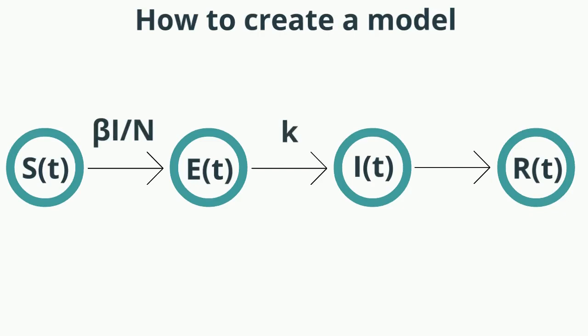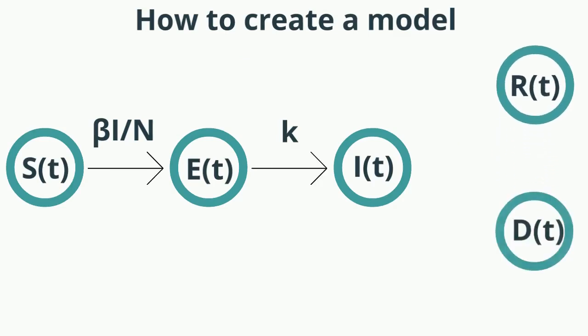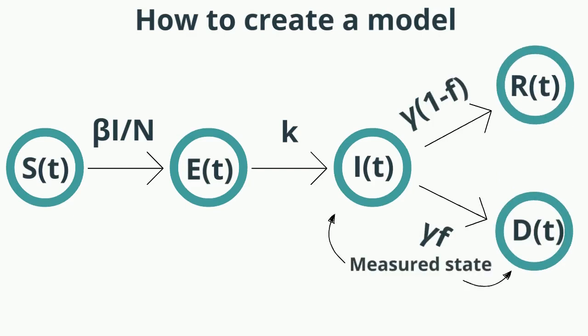However, our model relies on estimating certain variables. To do that, we need to measure certain states. In this case, we have a measurement for the infected state, but we also have a mortality measurement. So how do we incorporate that information into our model? We can do that by adding a mortality coefficient, which we call f. This way we can incorporate two measured states into our model.